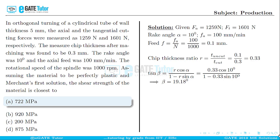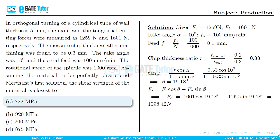The next step is to calculate the shearing force Fs, given as: Fs = Ft·cos(beta) − Fa·sin(beta), where Ft = 1601 newton is the tangential cutting force, Fa = 1259 newton is the axial cutting force, and beta = 19.18 degrees is the shear plane angle. Substituting the corresponding values and simplifying gives the shear force Fs = 1098.42 newton.